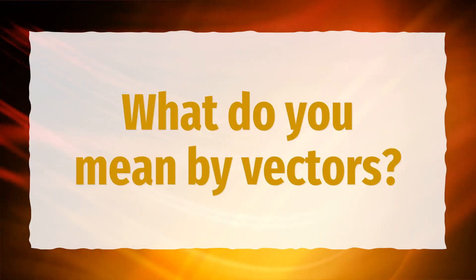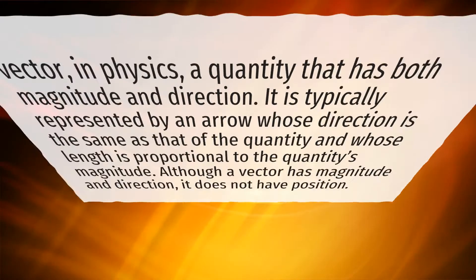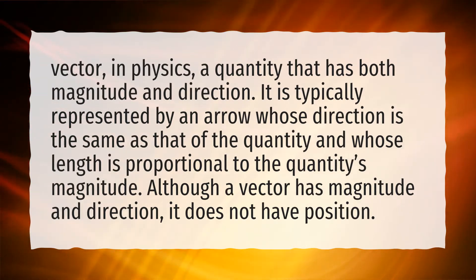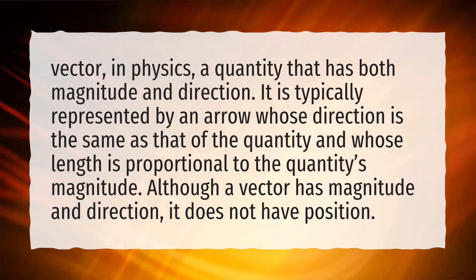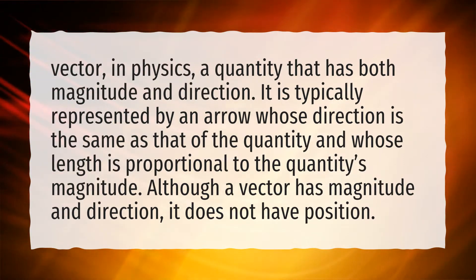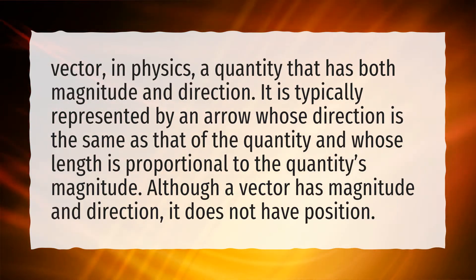What do you mean by vectors? In physics, a vector is a quantity that has both magnitude and direction. It is typically represented by an arrow whose direction is the same as that of the quantity and whose length is proportional to the quantity's magnitude. Although a vector has magnitude and direction, it does not have position.